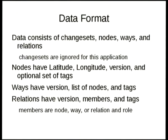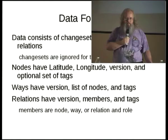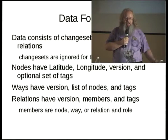There are nodes, ways, and relations. A node has a latitude, longitude, version, and an optional set of tags. Nodes are used either as parts of ways or relations, or as a point of interest like a shop, a stoplight, or even a tree.